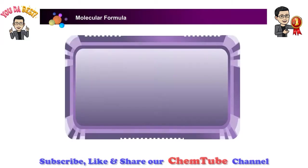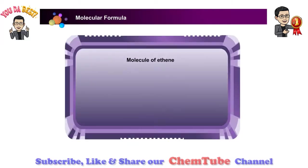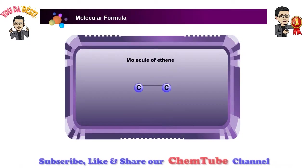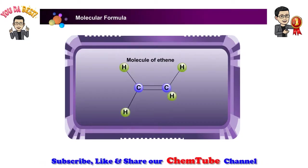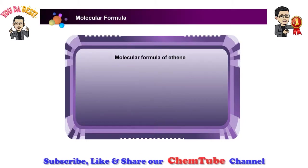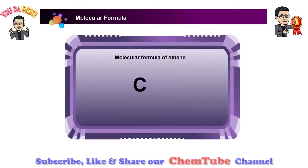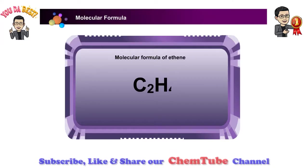Let's look at the molecule of ethane. In one molecule of ethane, there are two carbon atoms and four hydrogen atoms. The molecular formula of ethane is C2H4.